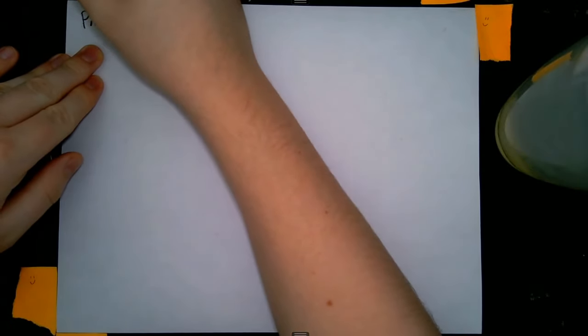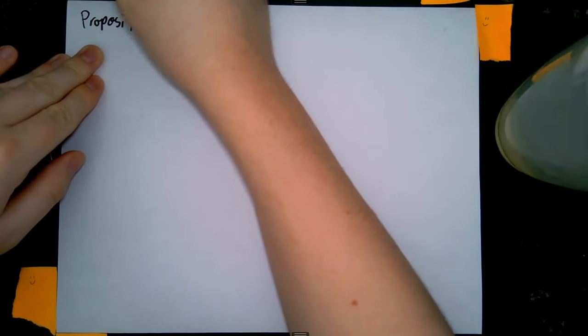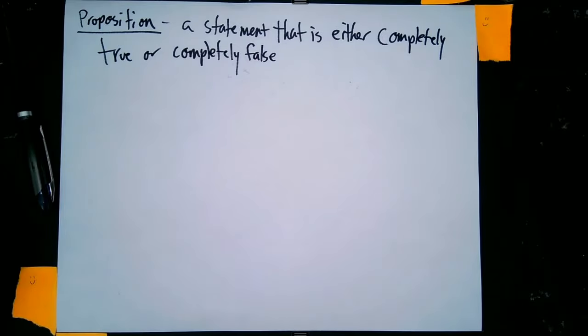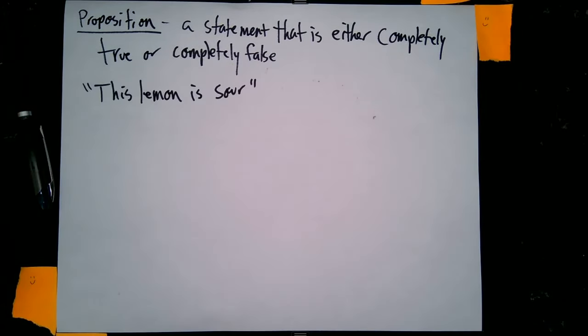Like I talked about at the beginning of the lecture, we are talking about statements of truth and falseness. So what we have is called a proposition. A proposition is a statement that is either completely true or completely false. When we look at the statement "this lemon is sour" from the beginning of the video, that is a proposition because either the lemon is sour or it is not sour.